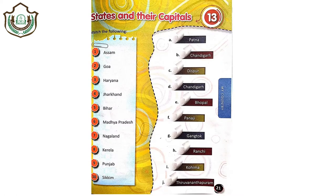The very first is Assam. It's a northeastern state of India and its capital is Dispur. The second one is Goa, which is famous for its beaches, and its capital is Panaji. Then the third one is Haryana. Its capital is Chandigarh.